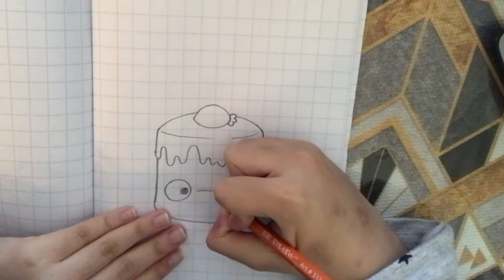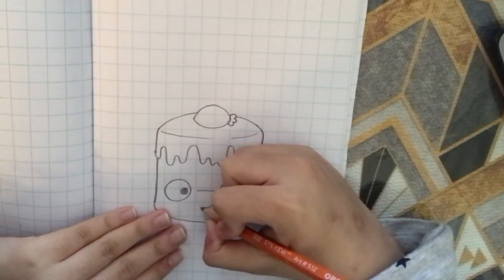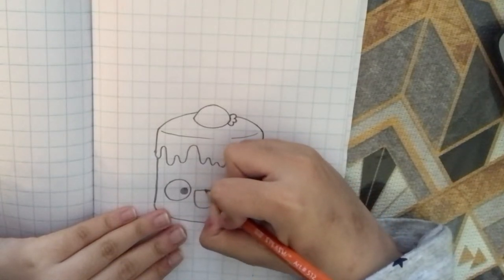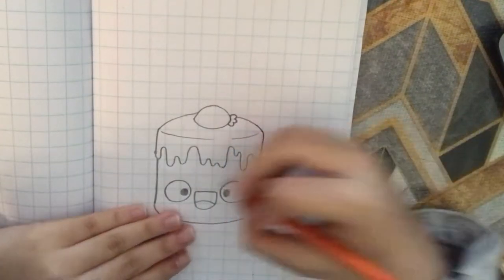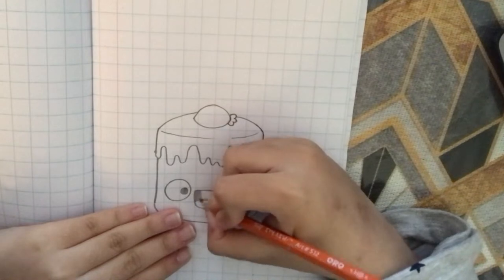Next, we're going to draw a mouth, starting with a curve over there and a straight line. We're going to draw a tongue with a curve, and we're going to fill the inside of the mouth in black.